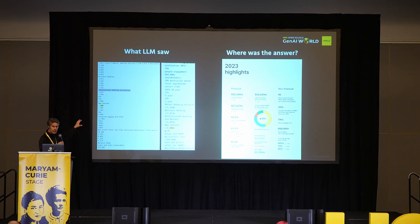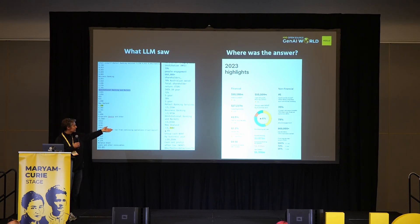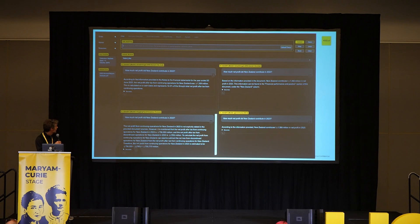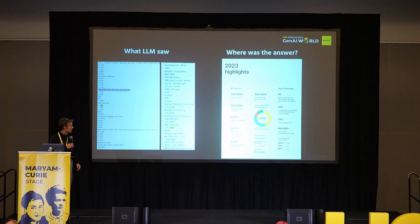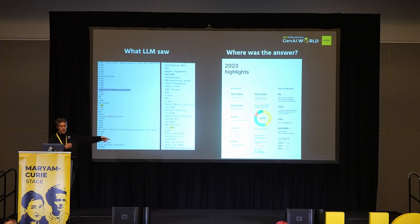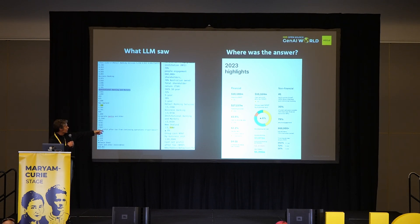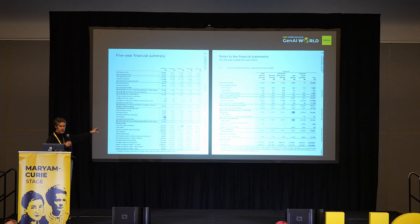This is what the LLM actually saw — it's a really difficult stream of text. As a human, there is a page where there are some answers. The question was: how much net profit did New Zealand contribute in 2023? It's not too hard to find if I give you the page. How does the model do this? This column of text is what it extracted out of a sort of infographic — that's pretty hard. There are also tables which contain all this information. So it's having to incorporate hundreds of pages, do retrieval in an interesting way. It's difficult.